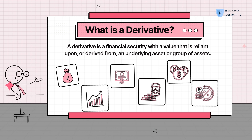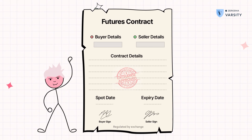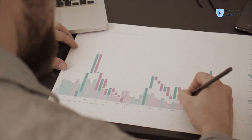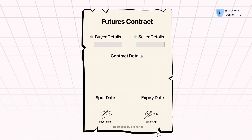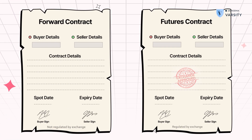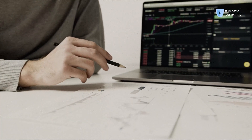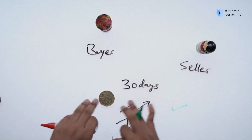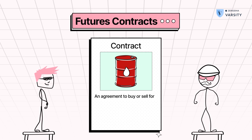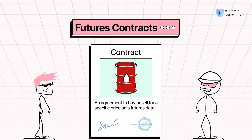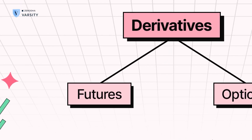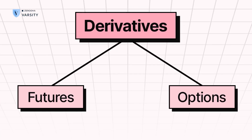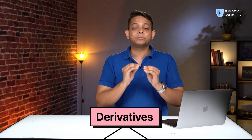There's also another derivative contract called futures. Over time, futures contracts have become the trader's preferred option. Futures are somewhat similar to forwards, so the best way to learn about the futures market is to first learn about the forwards market. My name is Prateek Singh, the founder and CEO of LearnApp.com. In this module, we're going to learn about futures. Options are also part of derivatives, but in this module, we're going to talk about just futures.